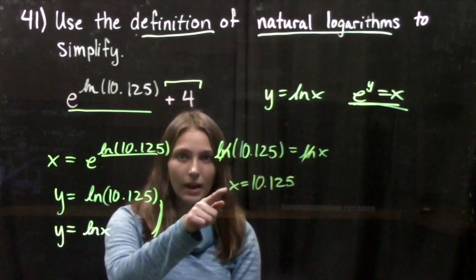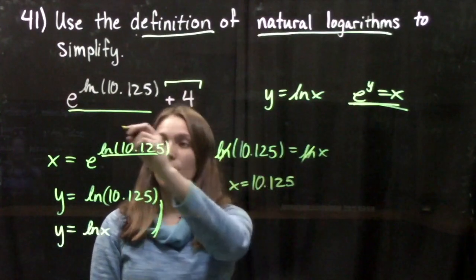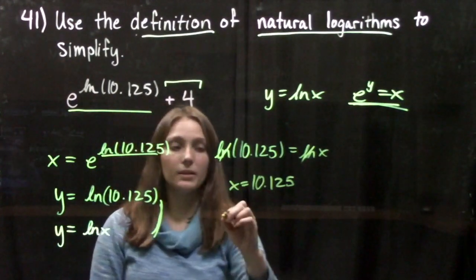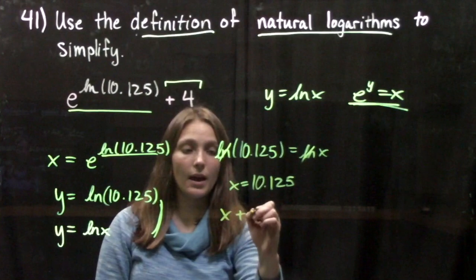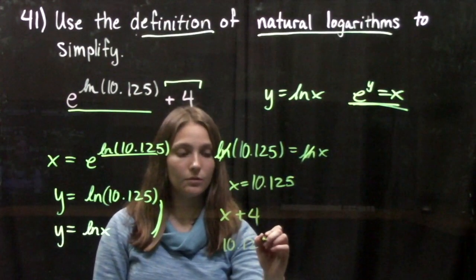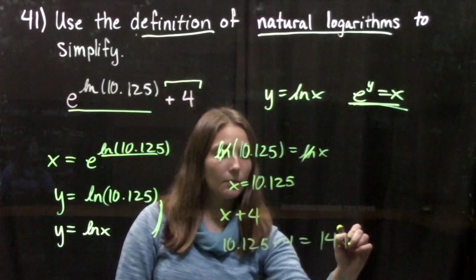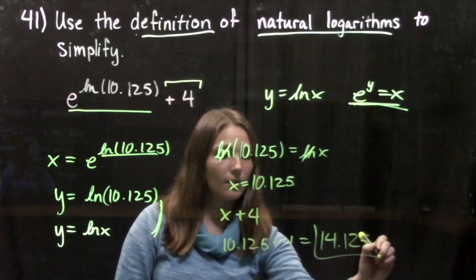Great, we've found x. Now we need to go back and plug it into the equation. So we have this x gets plugged in here, so we're looking to simplify x plus 4. When we plug in x, we get 10.125 plus 4, or 14.125, and that's our answer.